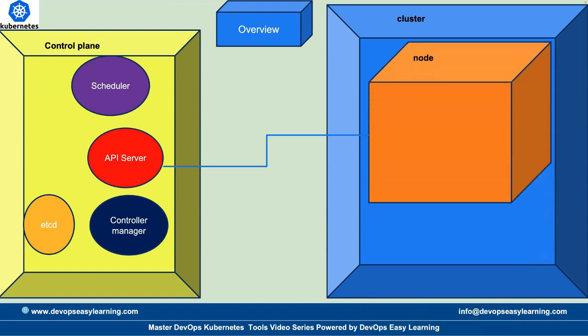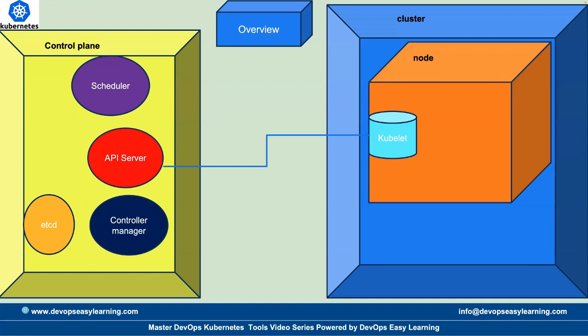Inside the cluster we have nodes, and inside the node we have kubelet. The control plane communicates with the cluster through the API server, and the API server talks directly to kubelet — as you can see from the arrow in the diagram. Inside the node we also have kubeproxy, which manages networking.